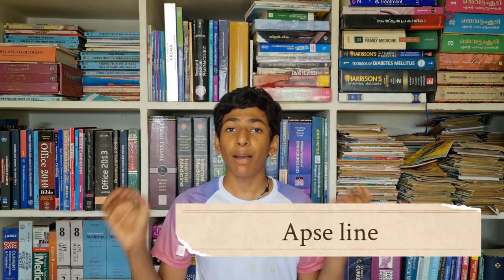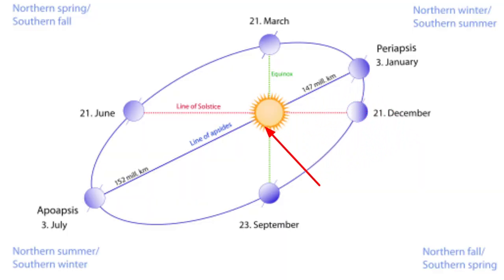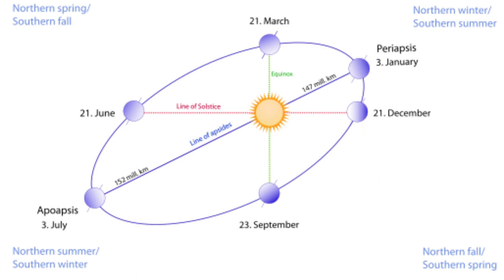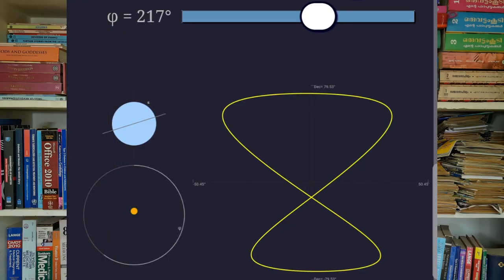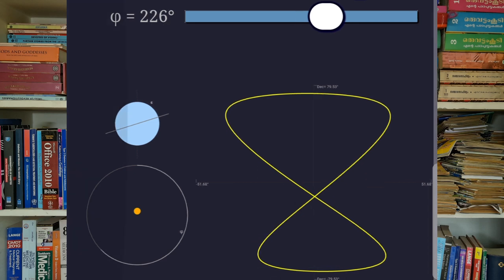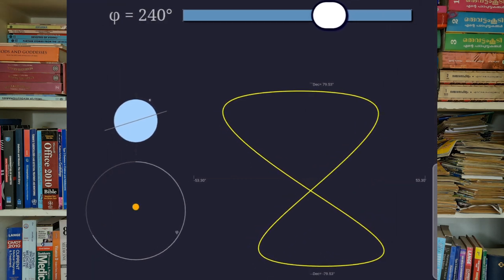But there is one more thing that controls the shape of an analemma: the apsidal line. An apsidal line is a line drawn from the apogee to the perigee of a planet. Apogee is the place where the planet will be farthest away from the sun, and perigee is where the planet is nearest to the sun. Now during the winter solstice, the earth will be around this position. If you draw a line from earth to the sun at that time, you'll get an angle like this. This angle is known as the angle of aps, and it determines how much larger the bottom portion of the analemma will be compared to the top portion.